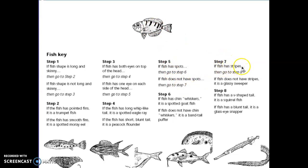Does he have stripes? Definitely. So I'm going to go to step eight. Here is step eight, and this is going to be the deciding factor. Does he have a V-shaped tail or does he have a blunt tail? In this case, 'blunt' just means it's not sharp — it's definitely not a V. So we're going to say this fish is a glass eyed snapper.